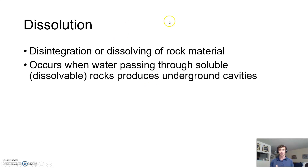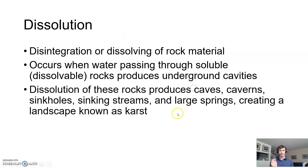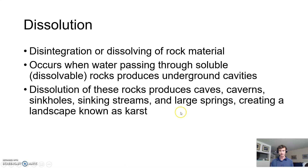From a geologic point of view, we're talking about water passing through soluble rocks to make underground cavities, and furthermore to create things like caves, caverns, and sinkholes. You could have sinking streams — cases where a river flows along and then just drops down into the ground and disappears. There are also springs, and the sum total of all these things together makes a kind of landscape known as karst.